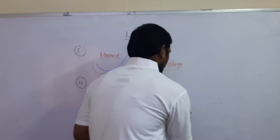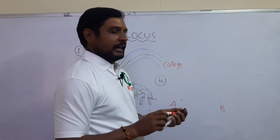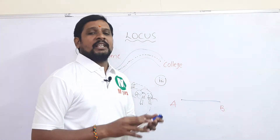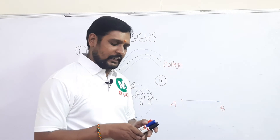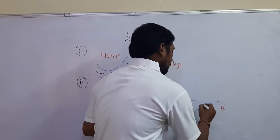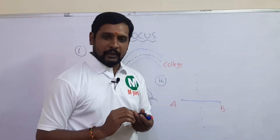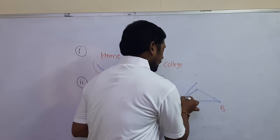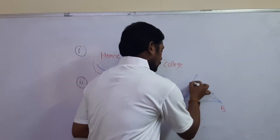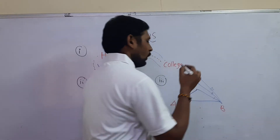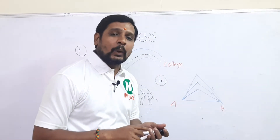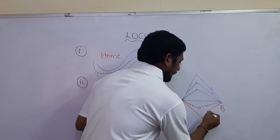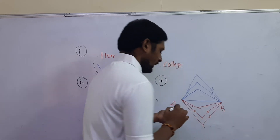Suppose we take two points A and B on a plane, and AB is a line segment. The question is: how many points are equidistant to A and B? There may be infinitely many points which are equidistant to AB. If we join all those points, this distance is equal, this distance is equal, this distance is equal — and so on.